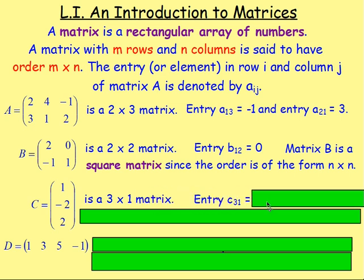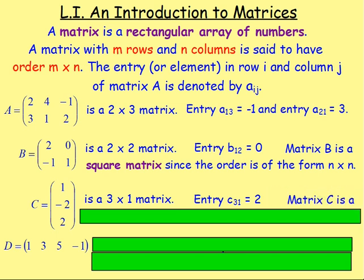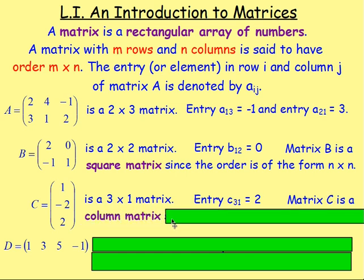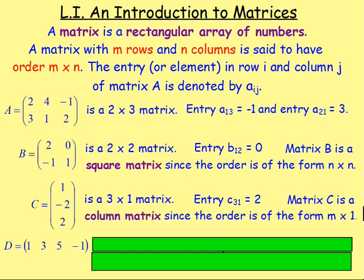And entry C three one would equal — well, third row: one, two, three. First column — that there would be two. Matrix C is known as a column matrix because it is of the order M by one.